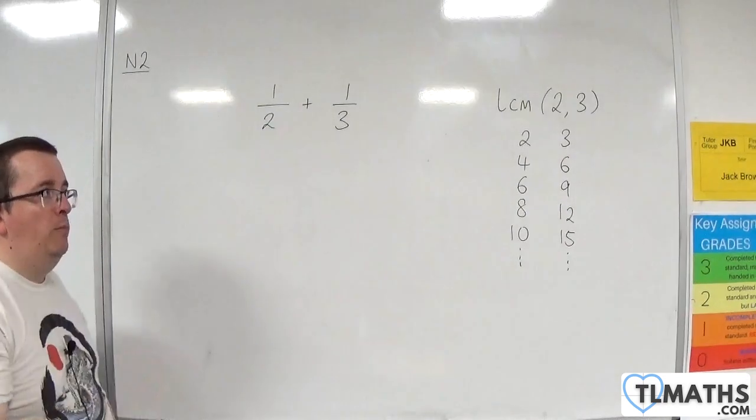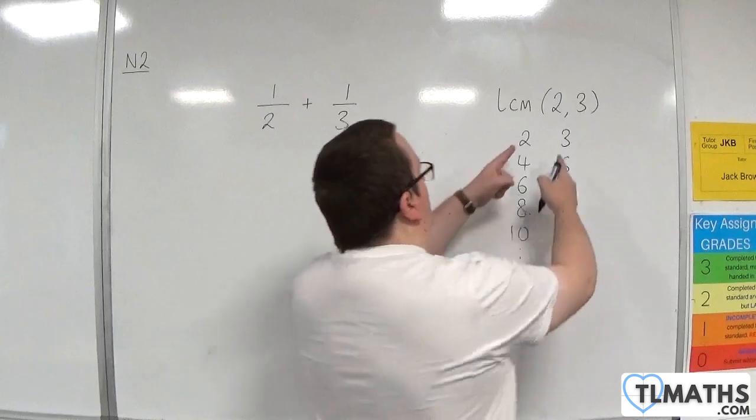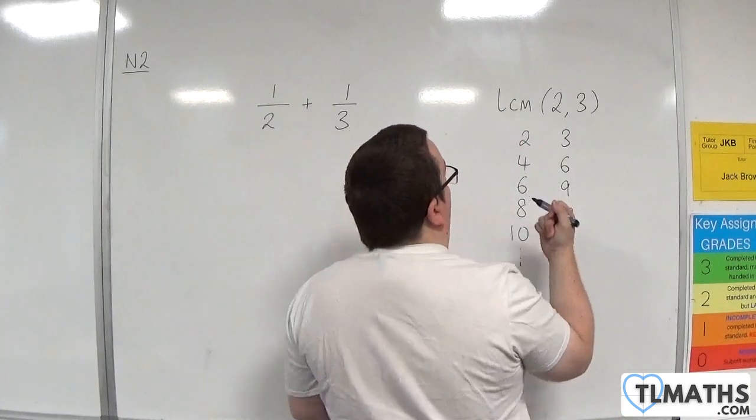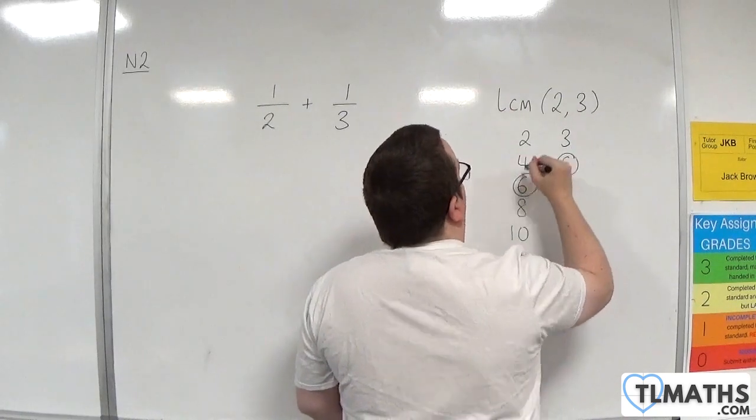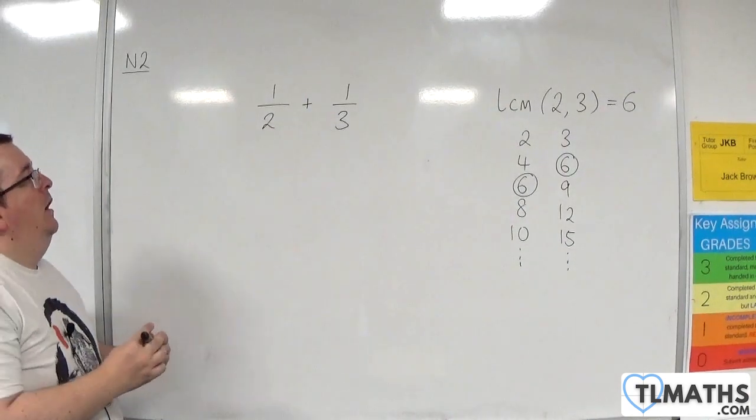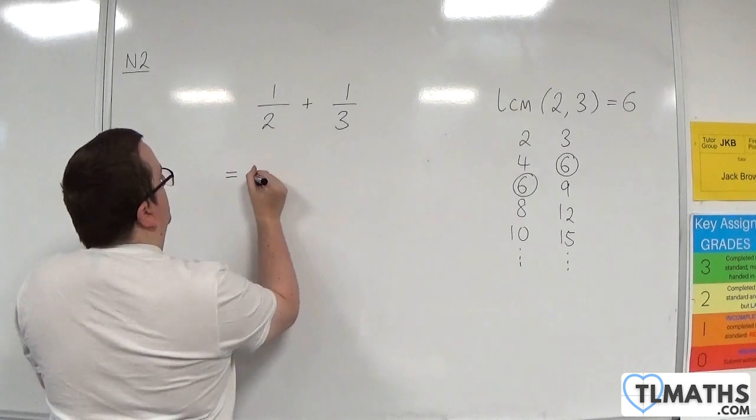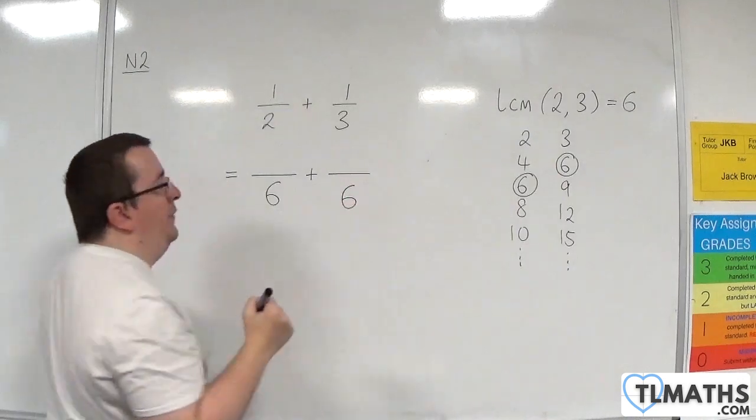And the lowest common multiple has got to be common to both lists, a number that's in both lists. It's the first number that you come across that is in both lists, the lowest of them, which is 6. So the lowest common multiple of 2 and 3 is 6. So what I can do then is rewrite both of these fractions as something over 6.